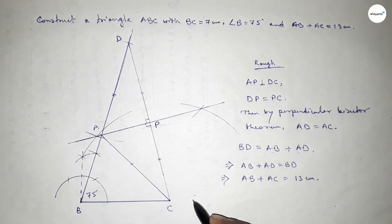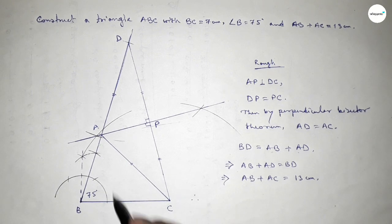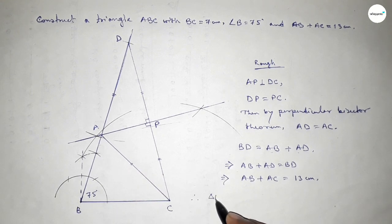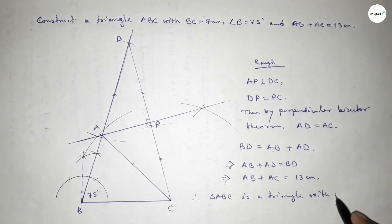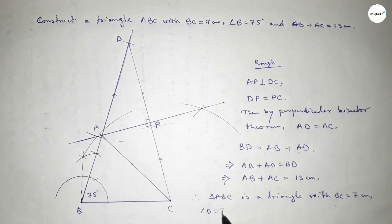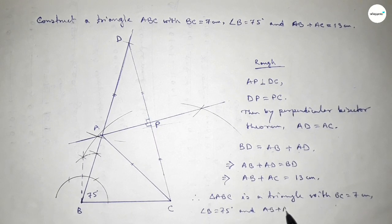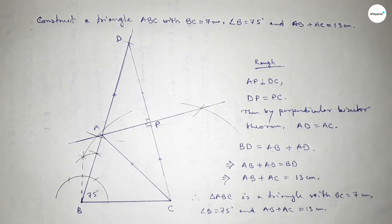Therefore, triangle ABC is the required triangle with BC equal to 7 centimeters, angle B equal to 75 degrees, and AB plus AC equal to 13 centimeters. Thanks for watching — if this video was helpful, please share it with your friends.